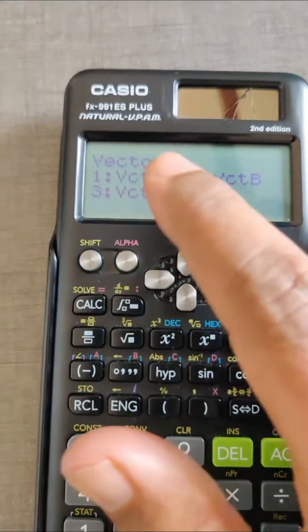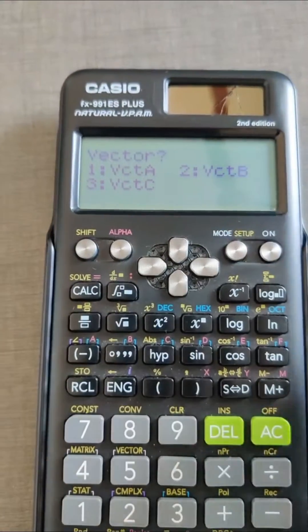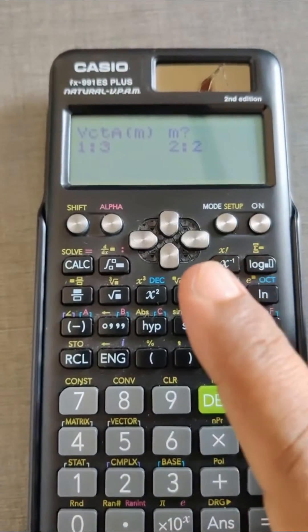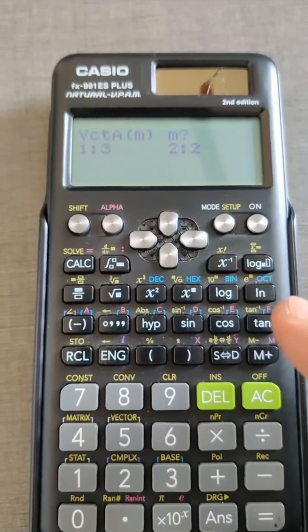It will ask you for vector A, B, or C. Maximum you can enter three vectors in this calculator. We will select option 1 here. Three or two i j k values are available, so we will go for the first option.